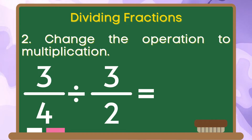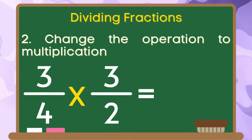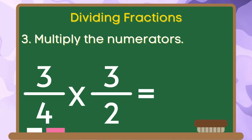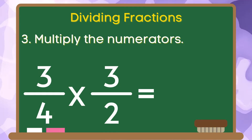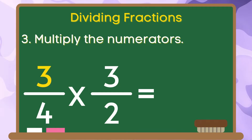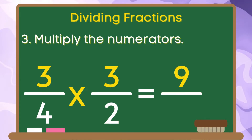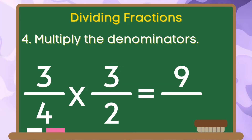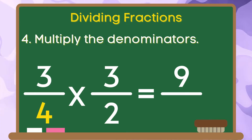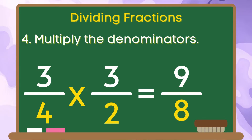For step 2, we are going to change the operation division to multiplication. Step 3, we are going to multiply our numerators. 3 times 3 is equal to 9. For step 4, we are going to multiply our denominators. 4 times 2 is equal to 8.